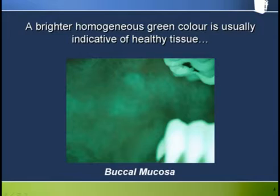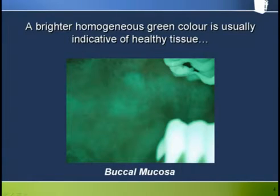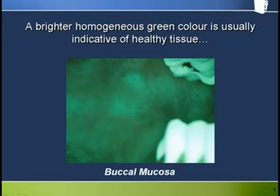Here we see the buccal mucosa with the highly fluorescing teeth on the right of the picture. The buccal mucosa is also typically green but is also a high risk site for trauma and consequent inflammation. It is quite typical to see at least some little patches of darkness, as we see in this picture at the back, which shows some mild trauma and inflammation with a resultant dark patch through the Velscope.